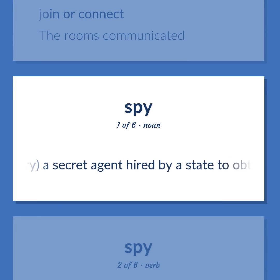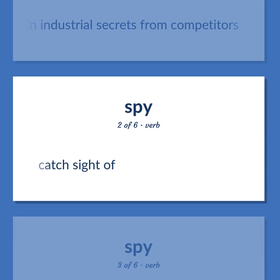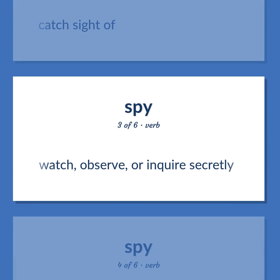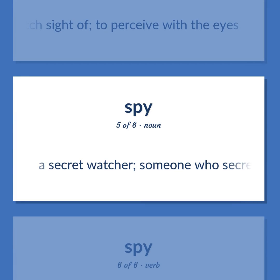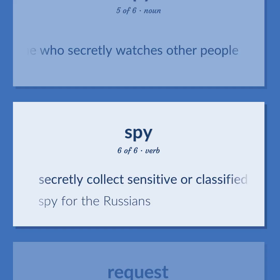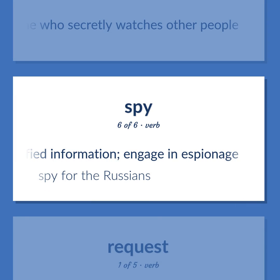Spy: a secret agent hired by a state to obtain information about its enemies, or by a business to obtain industrial secrets from competitors. To catch sight of. To watch, observe, or inquire secretly. To perceive with the eyes. A secret watcher — someone who secretly watches other people. To secretly collect sensitive or classified information; engage in espionage. Example: Spy for the Russians.